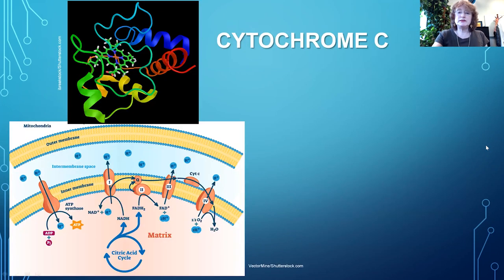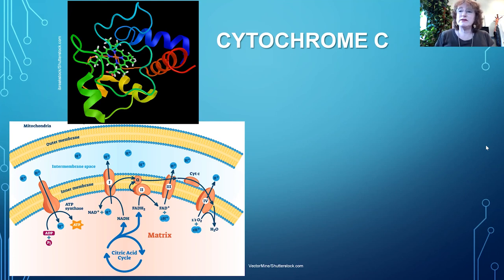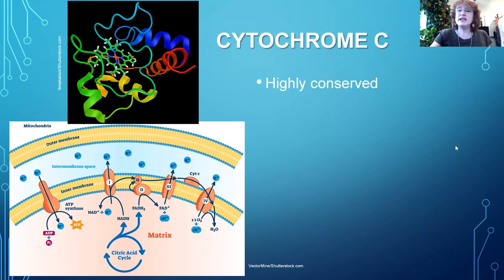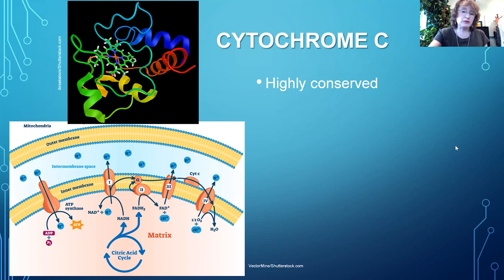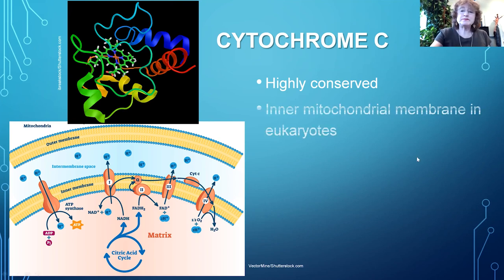Cytochrome C uses heme. Cytochrome C is a fairly simple protein — a single polypeptide — which has several alpha helices in it, with the heme in the middle. The function of cytochrome C is highly conserved in all organisms that have an electron transport chain. In fact, it was probably one of the first proteins ever sequenced. It is located on the inner mitochondrial membrane, at least within eukaryotes.